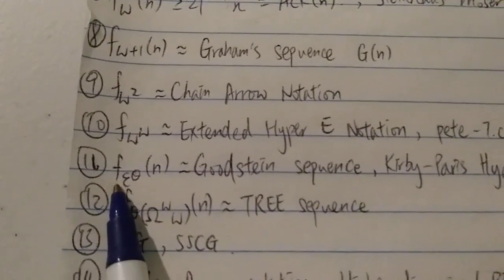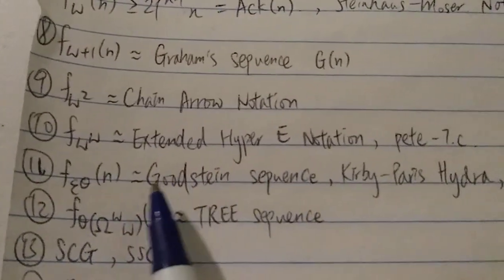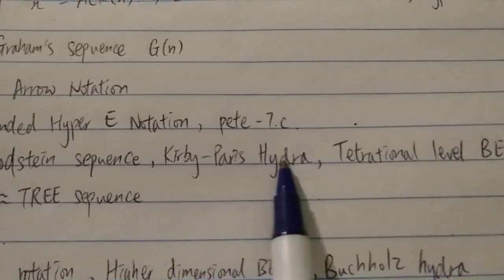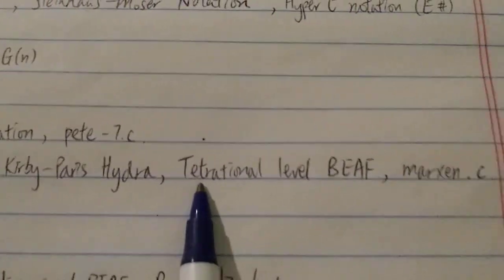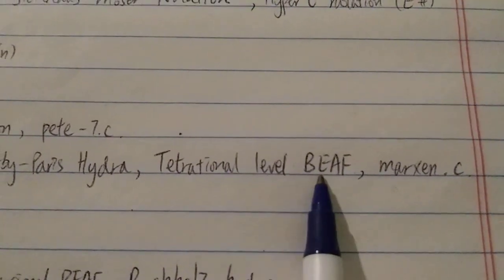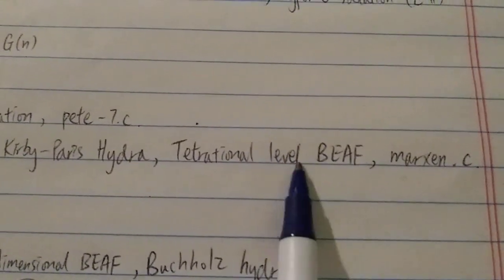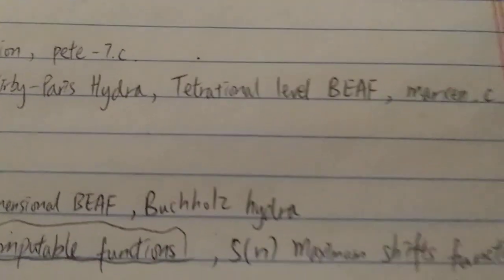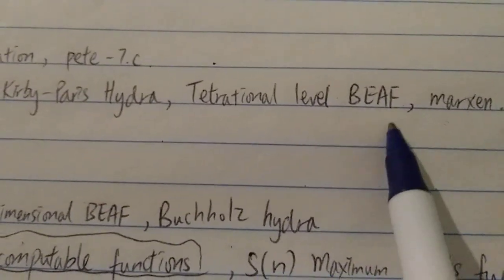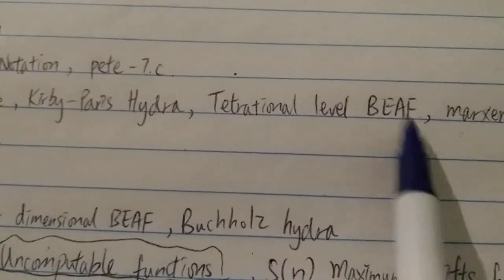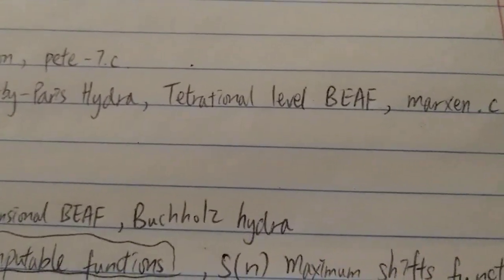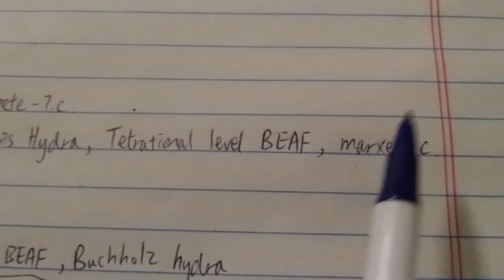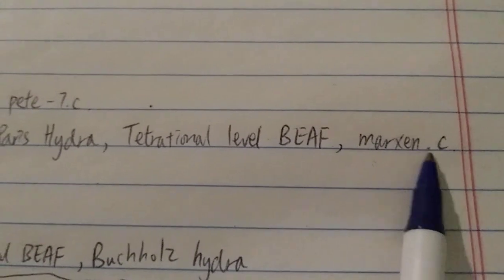And next, we have F_ε(n). And we have the Goodstein sequence and the Kirby-Paris Hydra and also tetrational level of BEAF. So basically, the tetrational BEAF is the most agreed upon, well-defined BEAF. And anything beyond or above the tetrational level is kind of ill-defined or not very well-defined. And we also have this one. This is the second-place finish of the loader's competition.